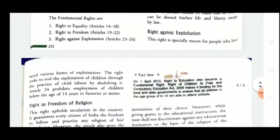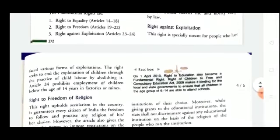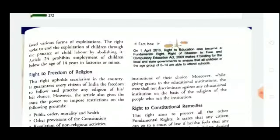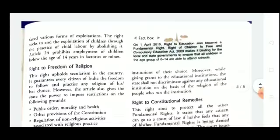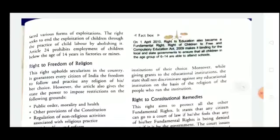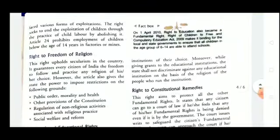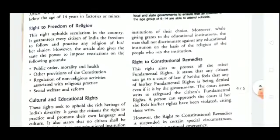Right Against Exploitation is a very important right given to protect children under the age of 14 years. It means children are not allowed to work in any hazardous or dangerous places such as factories, mines, etc.